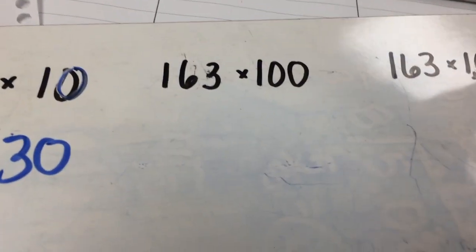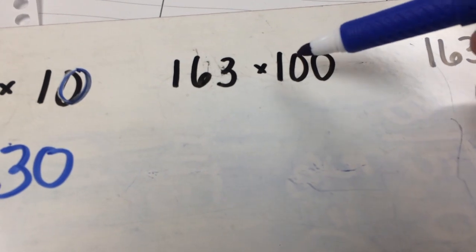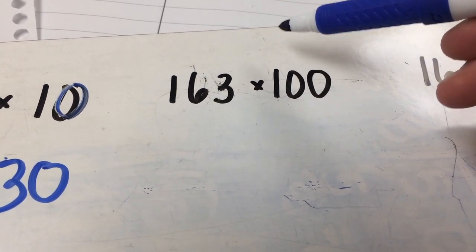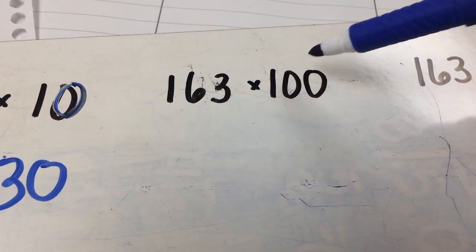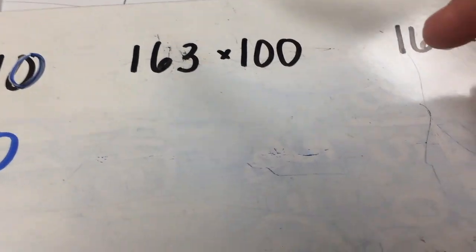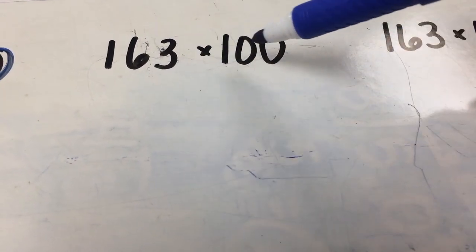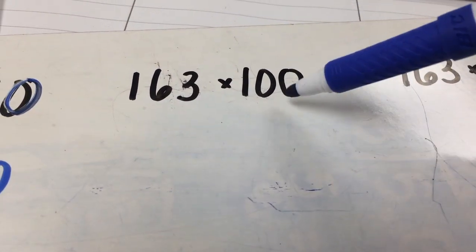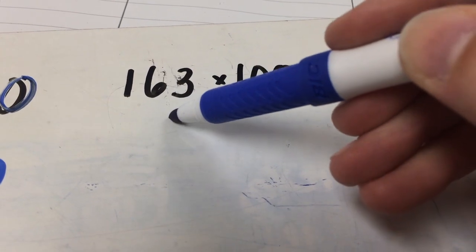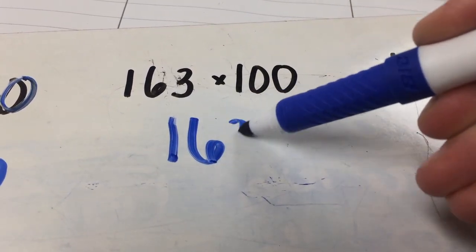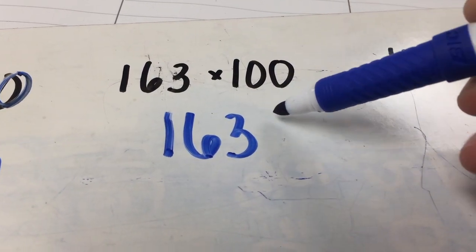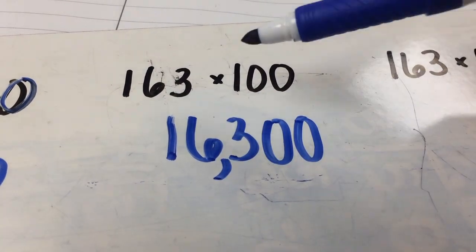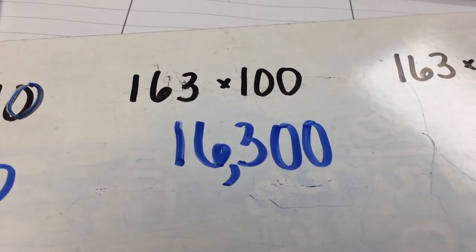Same thing with 100. So however many zeros there are — and if it's like 2 times 200, you would do 2 times 2 plus 2 zeros. So we have 163 times 1 is just 163, but then you just tack on these zeros to the end. So 163 — how many zeros in 100? Two. So you tack on those two zeros, put your comma in there, and it equals 16,300.